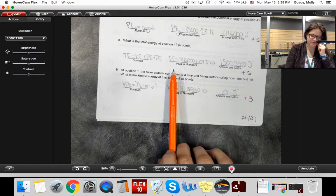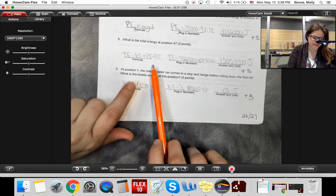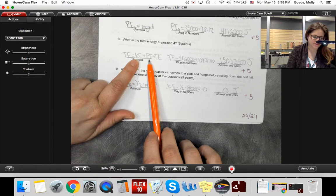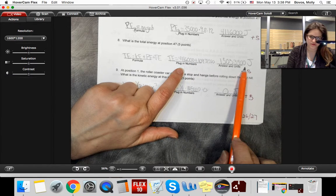When we get to our total energy, the only types of energy we have here are actually kinetic and potential. We don't know anything about the thermal energy. So we're just going to add those two numbers together, and we get our total energy.